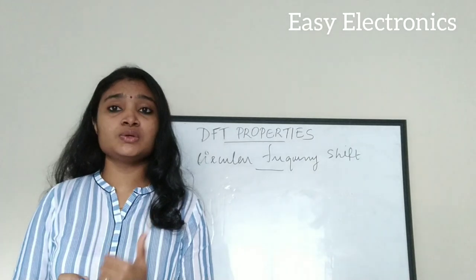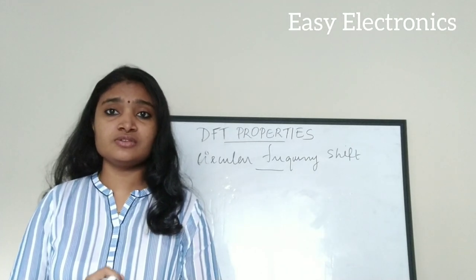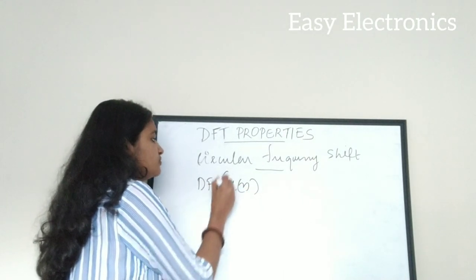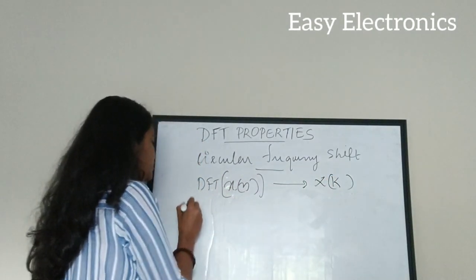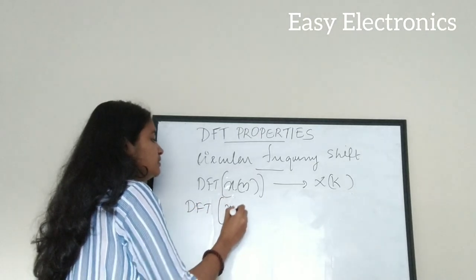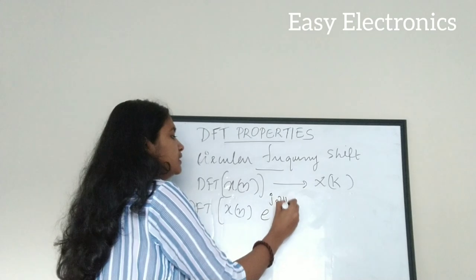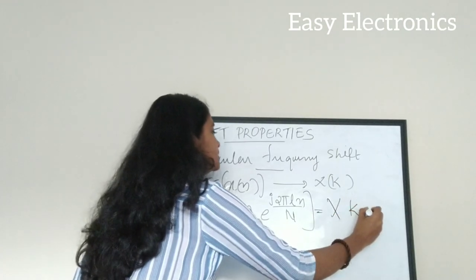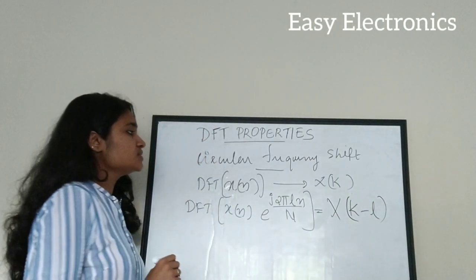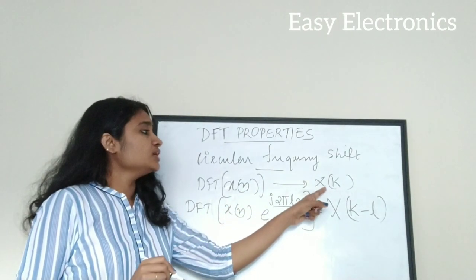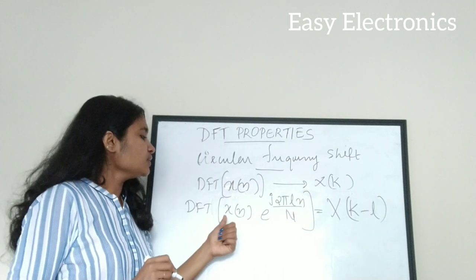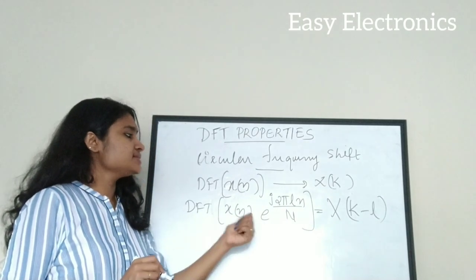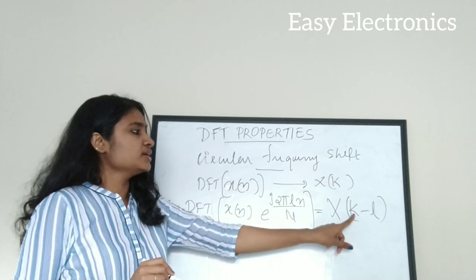According to the DFT circular frequency shift property, if x(n) is a sequence and the DFT of x(n) equals X(k), then the DFT of x(n) multiplied by e raised to j2πln over capital N equals X(k minus l).